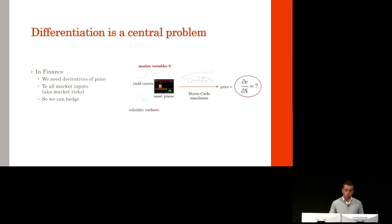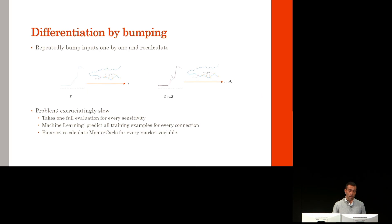In finance, we compute prices of derivatives transactions and trading books, generally with Monte Carlo, from a large number of market variables, including asset prices, yield curves, volatility surfaces, and so forth. And we must compute the market risks, the sensitivities of the prices to all of these variables so that we can hedge them.